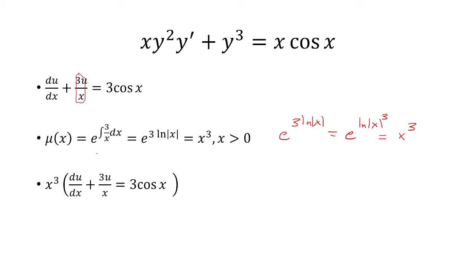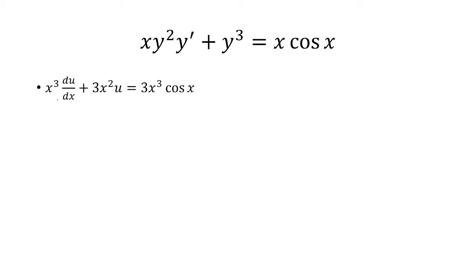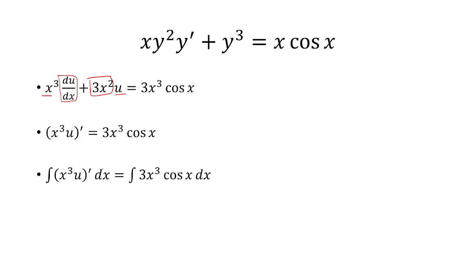Now I'm going to multiply my integrating factor into this differential equation and end up with this. Notice the derivative of x cubed is 3x squared, and the derivative of u is du over dx — this is just a product rule with x cubed and u. So I'm going to integrate both sides; the integral and the derivative cancel, leaving x cubed times u equals the integral of 3x cubed times cosine of x dx.